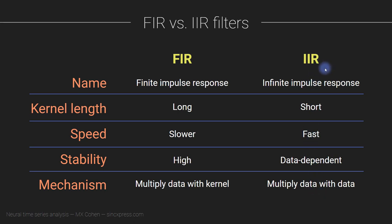If your supervisor is around 80 years old, he or she probably insists on using IIR filters because back in the 1970s the computational power just wasn't good enough for FIR filters. If you are doing research based on IIR filters, you shouldn't be too concerned. In the best case scenario FIR and IIR filters will be equally good, and in other situations FIR will be better. It's unlikely you'll get qualitatively dramatic differences — amazing results with FIR and totally unpublishable results with IIR. So don't worry too much about it, but if you are starting new research, definitely go for FIR filters.